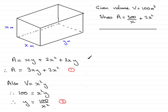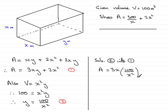then what I've got to do now is just simply substitute 2 into 1. So if I say that, sub 2 into 1, what we have is the area A is equal to 3x multiplied by y, which is 100 over x squared, so 100 over x squared, and then plus the 2x squared on the end.